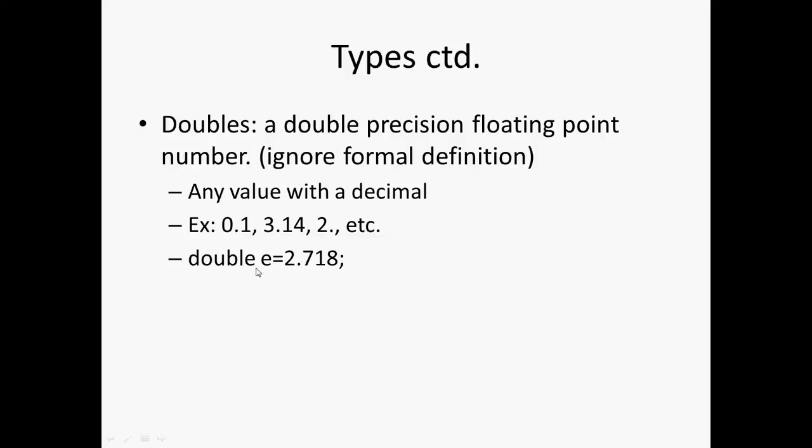And then this here, once again, is the assignment. So we've got the type, the variable, the equal sign, right? That'll get the assignment going. And then we've got the value. And then we end the line with a semicolon.